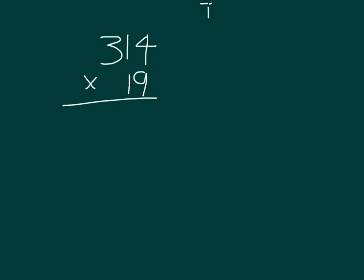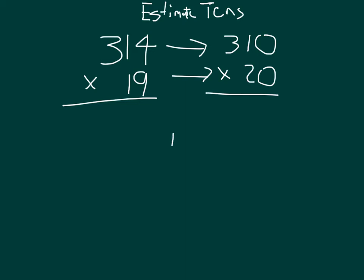Let's try that again, with an estimate to the nearest tens place. So we're estimating the product to the nearest tens place. 314 rounding to the nearest tens place is 310, and 19 rounded to the nearest tens place is 20. Remember that we are multiplying. So we have 310 times 20. Breaking this down, we have 310, so we have 3 hundreds plus 1 ten times 2 tens.